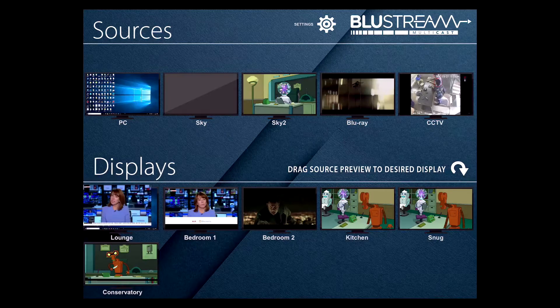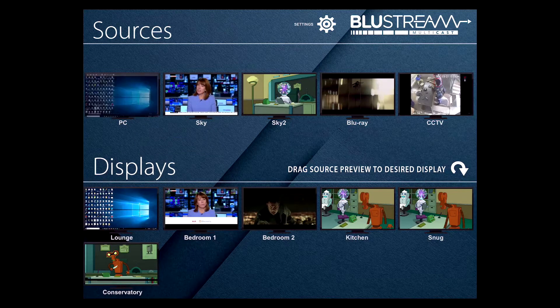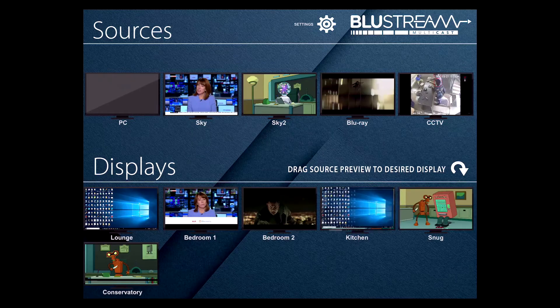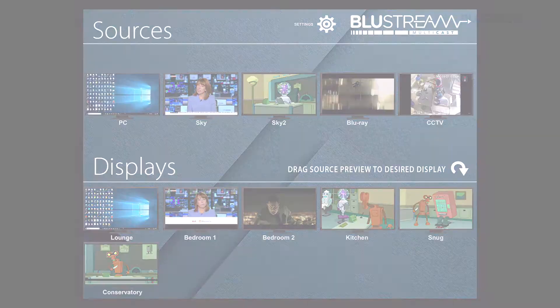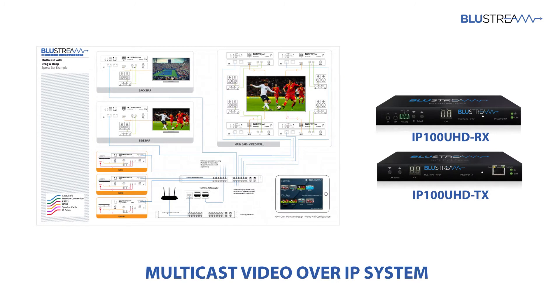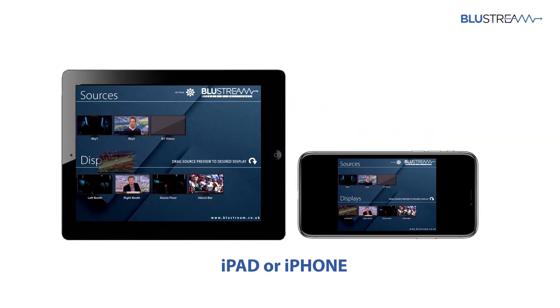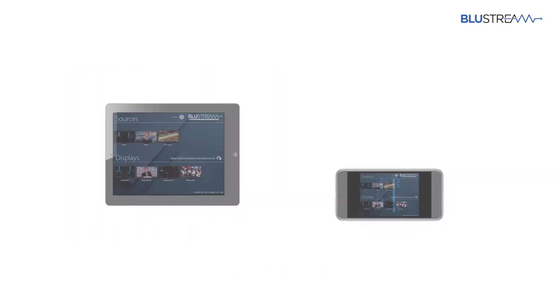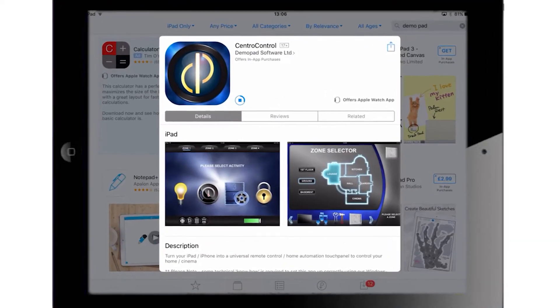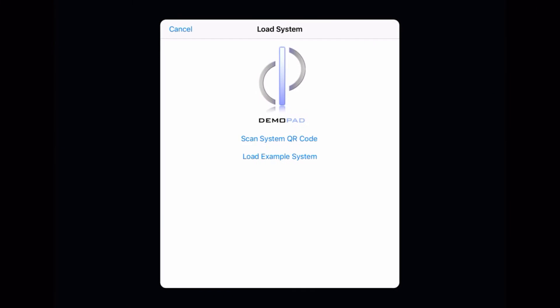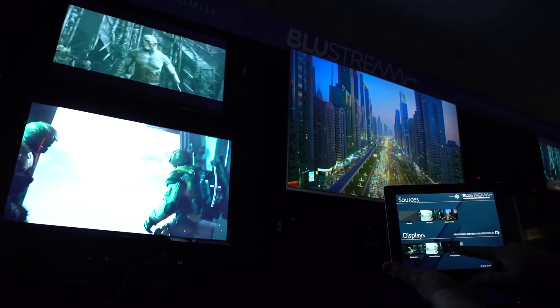This clever visual control system is ridiculously easy to install and configure. So what do you need? You need a multicast video over IP system, an IP bridge, a phone or tablet running iOS, then simply download the free Centro app from the App Store. Scan the provided QR code for drag and drop TV and you are ready to enter the world of drag and drop TV.